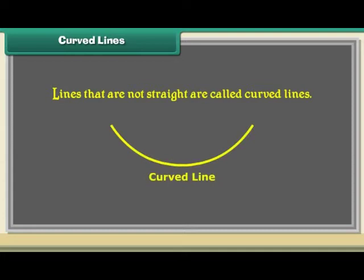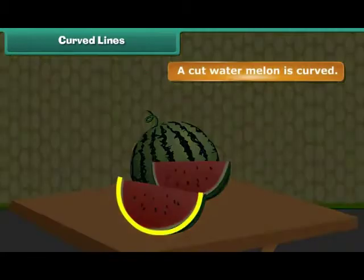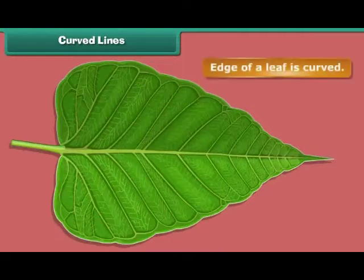Curved lines. Lines that are not straight are called curved lines. A cut watermelon is curved. Edge of a leaf is curved.